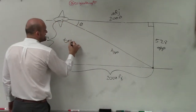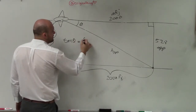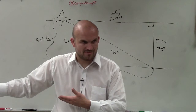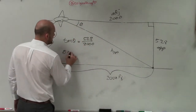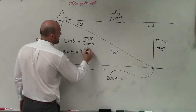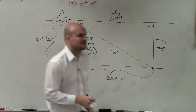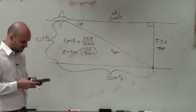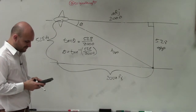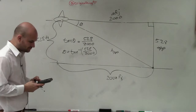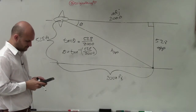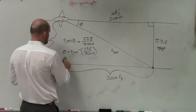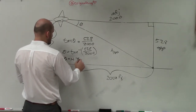Therefore, I can say tangent of theta — my missing angle — is equal to opposite over adjacent. So theta equals tangent inverse of 528 over 2,000. We just let the calculator do the work: inverse tangent of 528 divided by 2,000. And I get 14.79, so theta equals approximately 14.8 degrees when rounded.